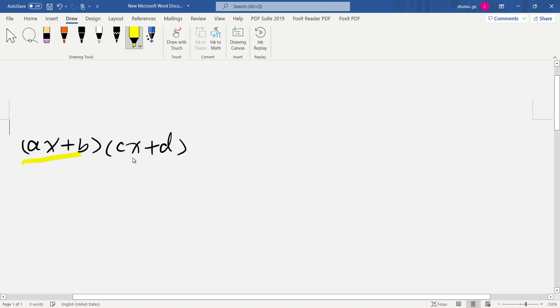This one times every term from the second. So we do that now. ax times cx, that means acx squared. Then b times cx plus bcx, then plus ax times d, then adx.